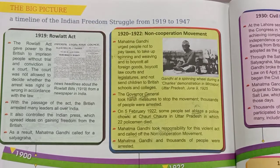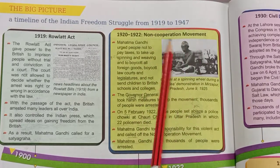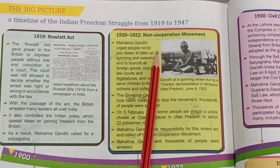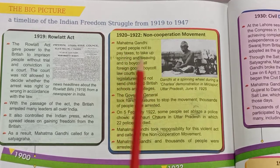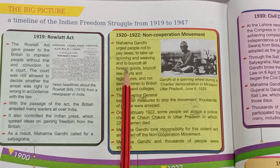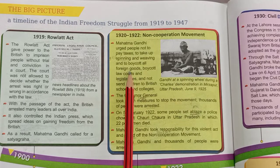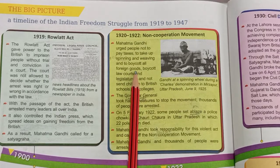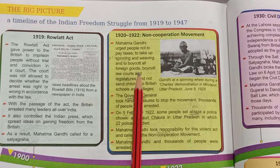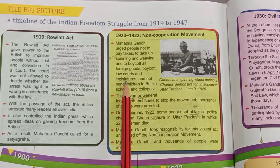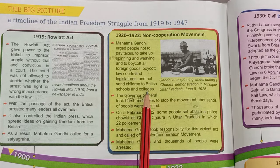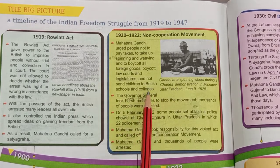Next is 1920 to 1922 — the Non-Cooperation Movement, led by Mahatma Gandhi. Mahatma Gandhi urged people not to pay taxes, to take up spinning and weaving, to boycott all foreign goods and use swadeshi items instead, to boycott British law courts and legislatures, and not to send children to British schools and colleges.